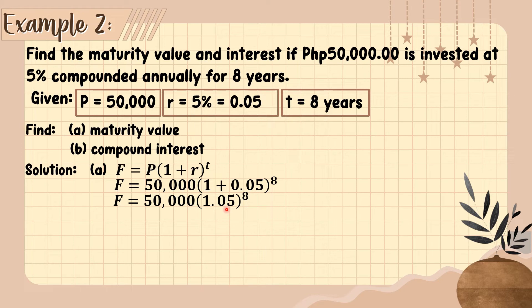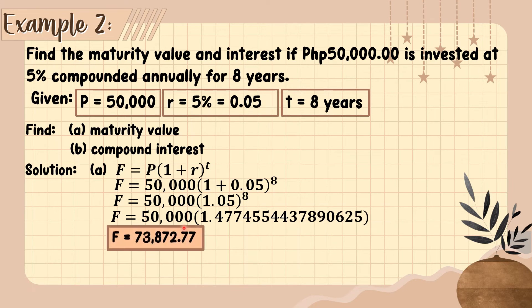Now, if we multiply 1.05 to the eighth power, the answer is 1.4774554437890625. If you multiply this by 50,000, the result is 73,872.77. So the future value is 73,872.77.